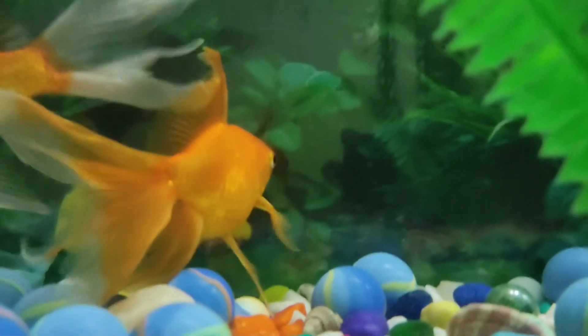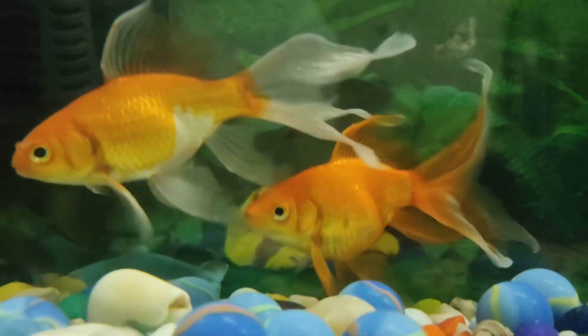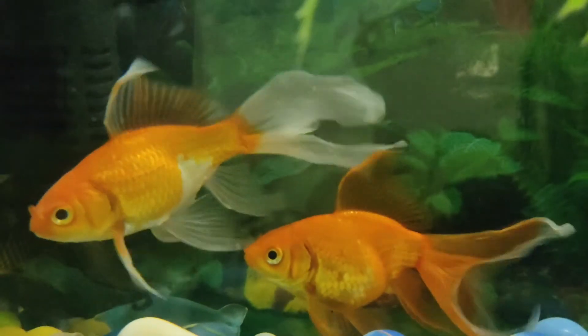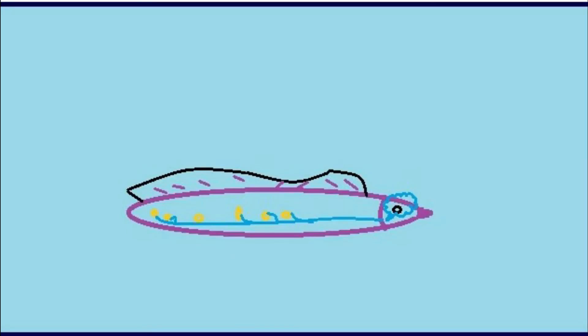How does this fish use this electricity? They use it to communicate. A good example is the electric eel, which can produce up to 6100 volts. A significant current is also produced by this fish.